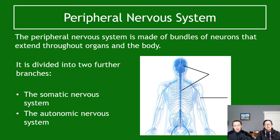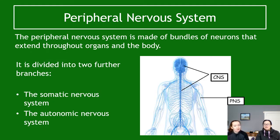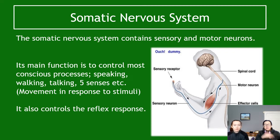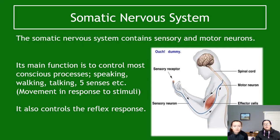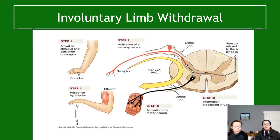The peripheral nervous system splits into two branches. The somatic nervous system, branch one, contains both sensory and motor neurons — that is something you need to know. Its main function is to control most conscious processes: speaking, walking, talking, and the five senses that you can consciously process. It also contains the reflex response. There are a couple of diagrams coming up for that — pause the video if you need to review them more carefully.